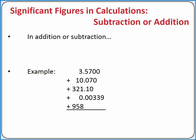In addition or subtraction, we don't keep track of the number of significant figures in each factor. We only look at how significant each number is with respect to the decimal point. For example, if we add these five numbers together, our calculator will report the answer as 1,292.74339.